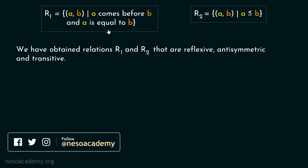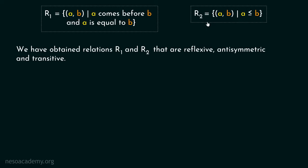Why is that so? These relations are reflexive because we have added the pairs of the form A comma A. Apart from this, these two relations are anti-symmetric as well because ordering is there. When we say A comes before B, it is not the case that B comes before A. When we say that partition comes before relation, we cannot say that relation comes before partition — so this relation is anti-symmetric. Similarly, when we say 1 is less than 2, we cannot say that 2 is less than 1. Apart from this, these two relations are transitive as well. So we can clearly say that R1 and R2 are reflexive, anti-symmetric and transitive.